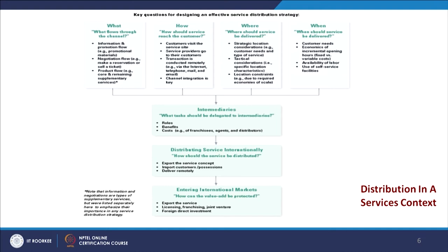Let us look at the figure on distribution in a service context. At the top it starts with key questions for designing an effective service distribution strategy, and the key questions are what, how, where, and when. What means what flows through the channel? How means how should service reach the customer? Where means where should service be delivered? And when is when should service be delivered? What flows through the channel includes: information and promotional flow, negotiations flow, and product flow — that is, core and remaining supplementary services.